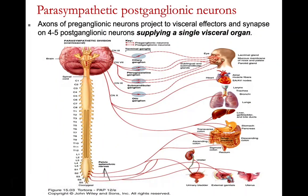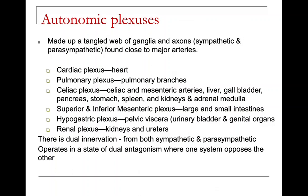Parasympathetic postganglionic neurons are fewer — preganglionic axons synapse on only four or five postganglionic neurons supplying a single visceral organ. Autonomic plexuses are tangled webs of ganglia and axons, both sympathetic and parasympathetic, found close to major arteries. The cardiac plexus goes to the heart; the pulmonary plexus to the lungs; the celiac plexus to the celiac and mesenteric arteries, liver, gallbladder, pancreas, stomach, spleen, kidney, and adrenal medulla. The superior and inferior mesenteric plexus serves the large and small intestines; the hypogastric plexus serves the urinary bladder and genital organs; and the renal plexus serves the kidneys and ureters.